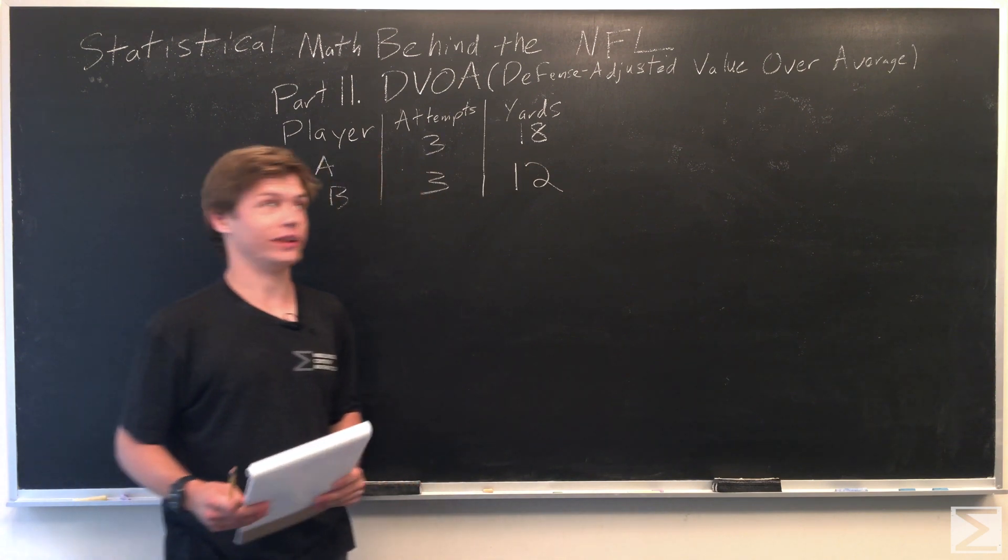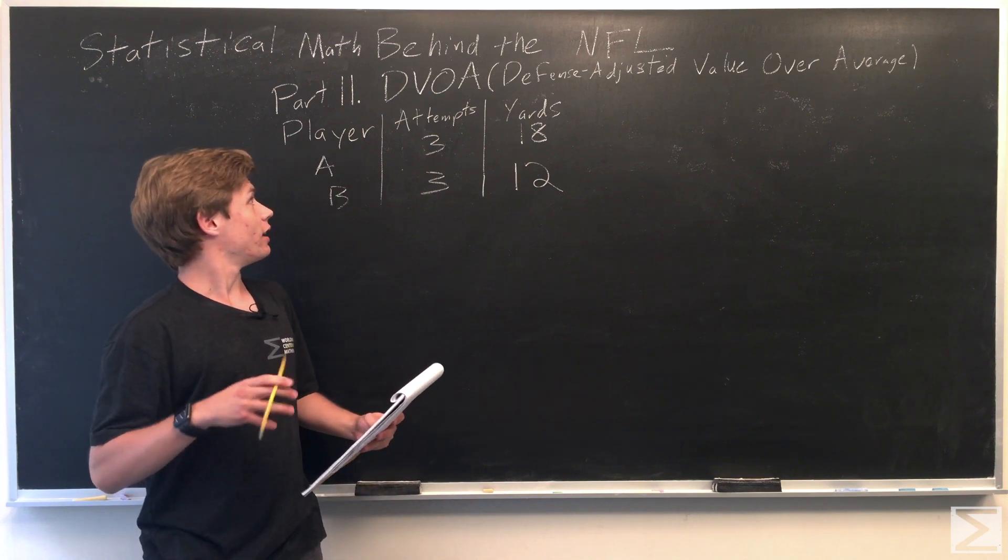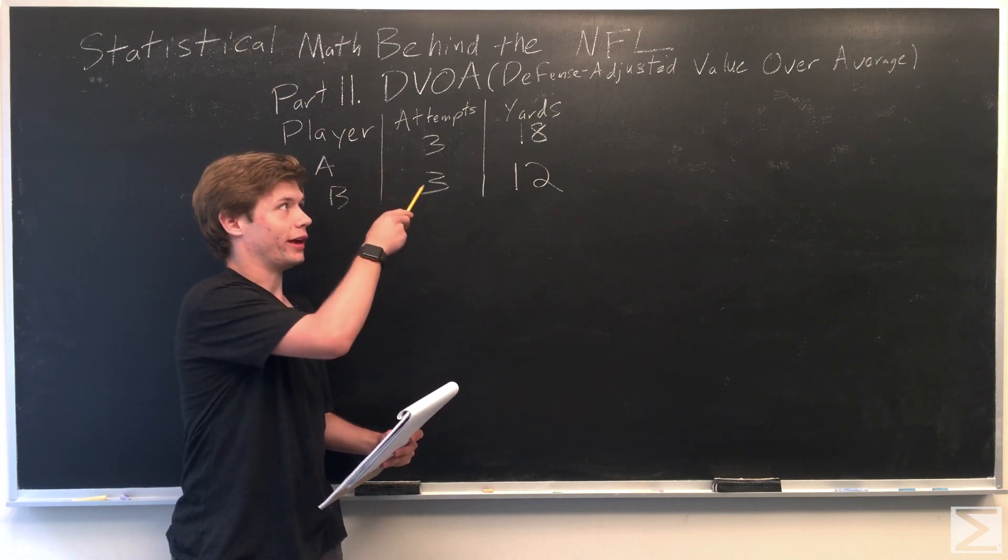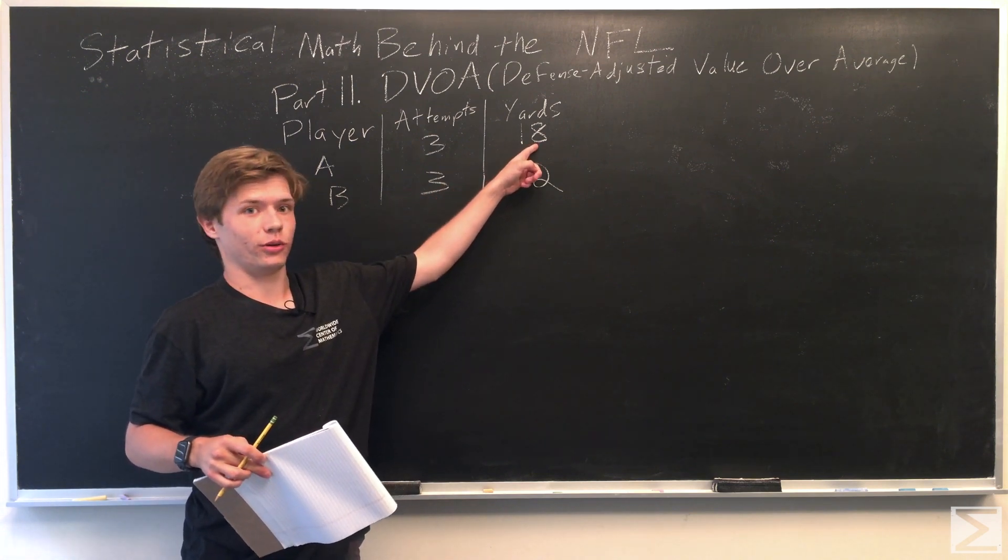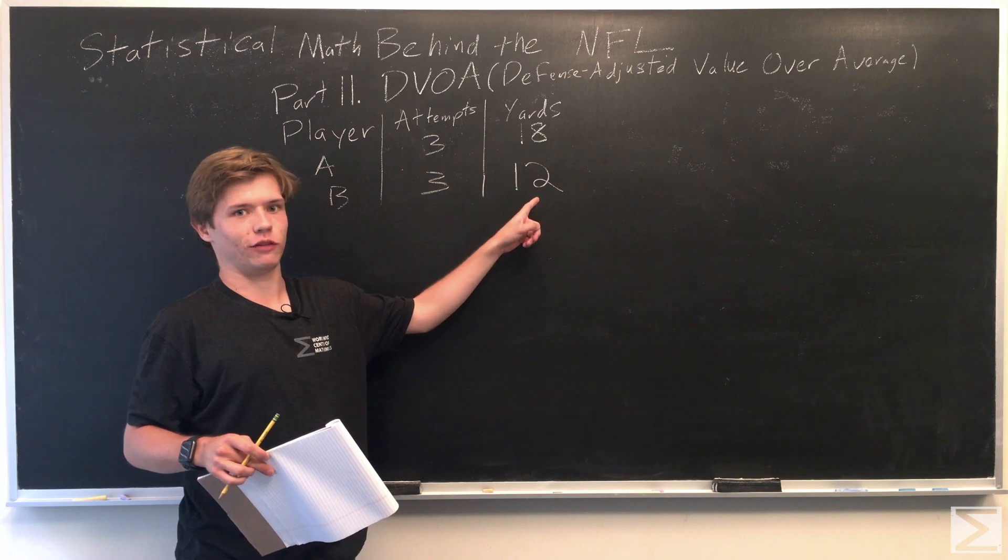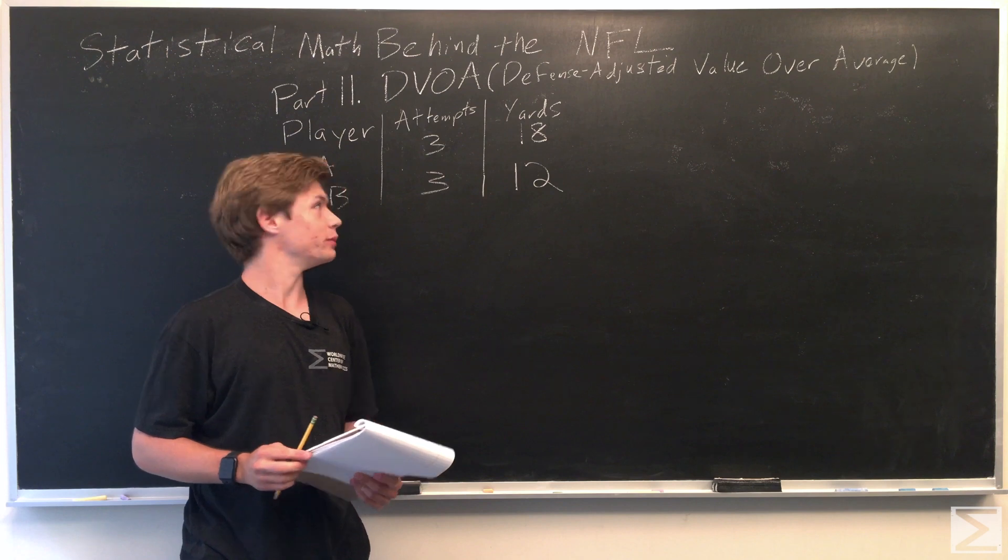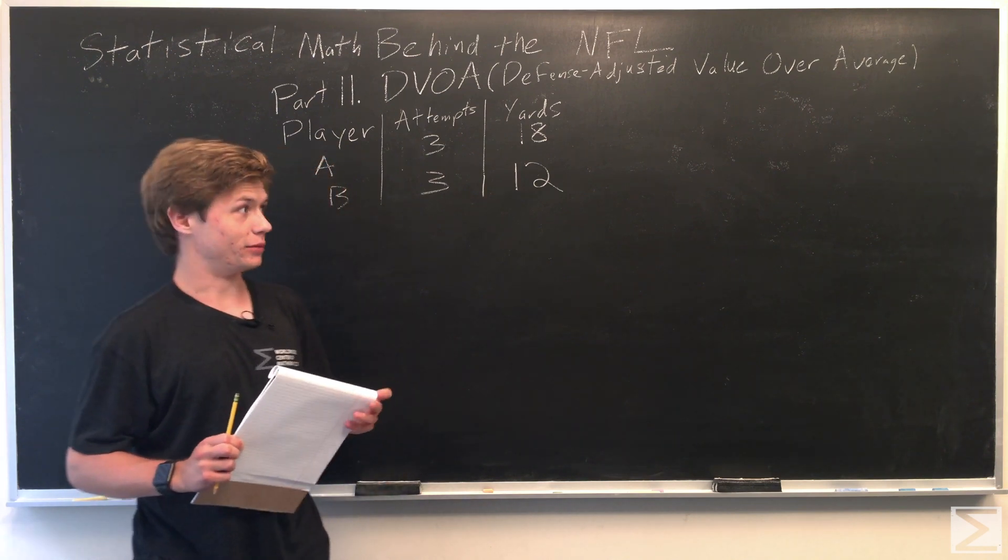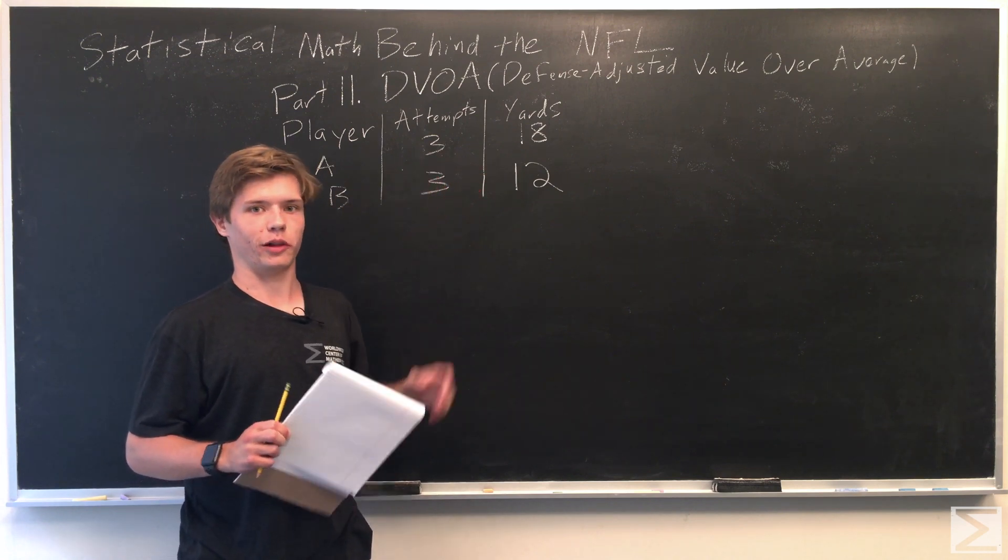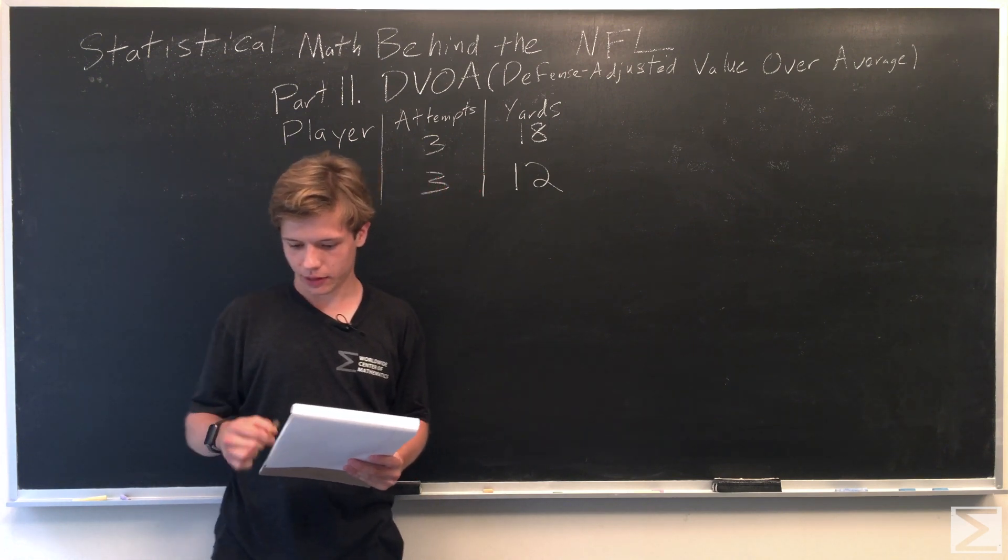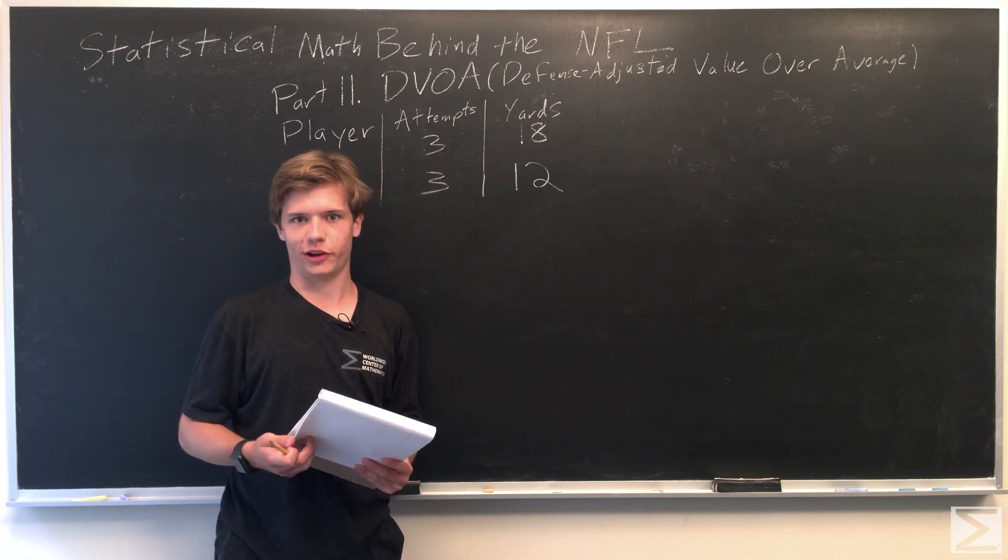So we're going to start off by looking at two hypothetical players. We'll say they play the same position, and they each attempt three different plays. Player A gets 18 yards total and player B gets 12 yards total. So if you were to say who the better player is, you would assume player A, just looking at these numbers, just because player A gets more yards per play. But this isn't necessarily true if you dig a little deeper into the situations behind the numbers.